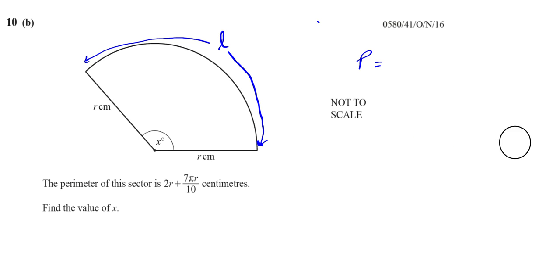So you've got here the length of the arc which is called l plus two times r, which is two times the radius. They told us that the perimeter of the sector is 2r plus 7πr over 10.